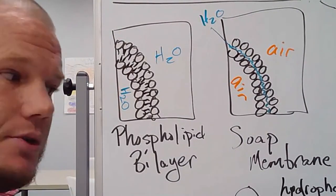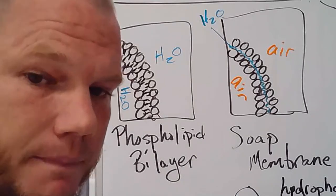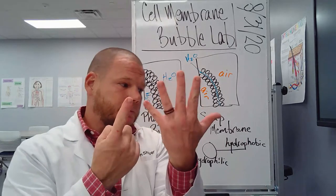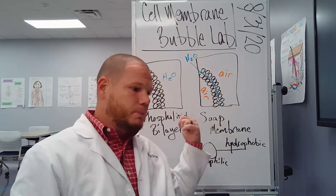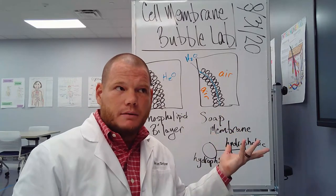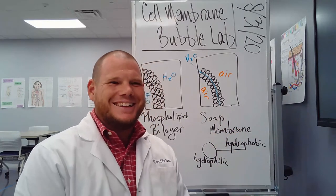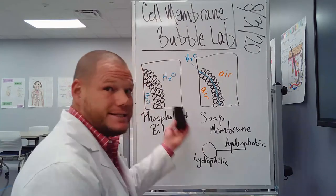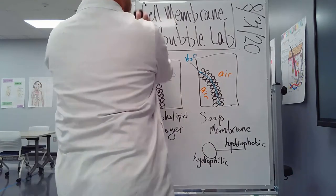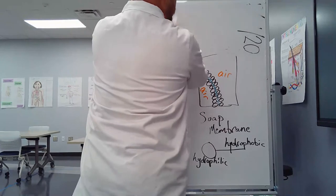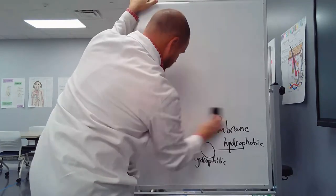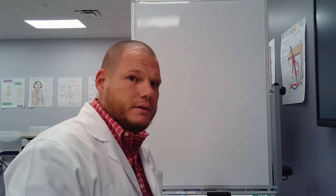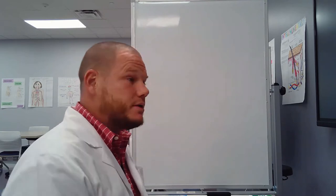So our soap membrane might look something like that. Make sure you get these sketches in your notes, just right alongside the other phospholipid stuff that we did. So we're going to examine six different properties of a cell membrane that the soap bubble can model just like, that soap bubble model and act just like a cell membrane does in these six different ways.